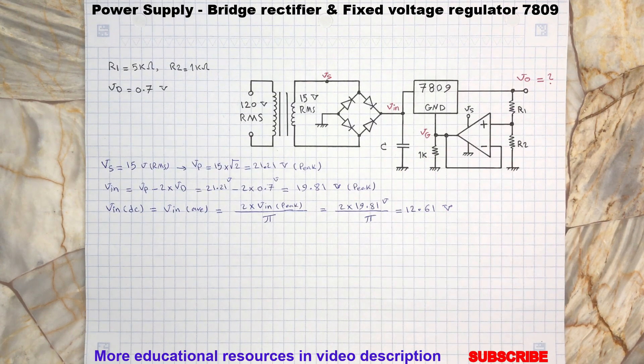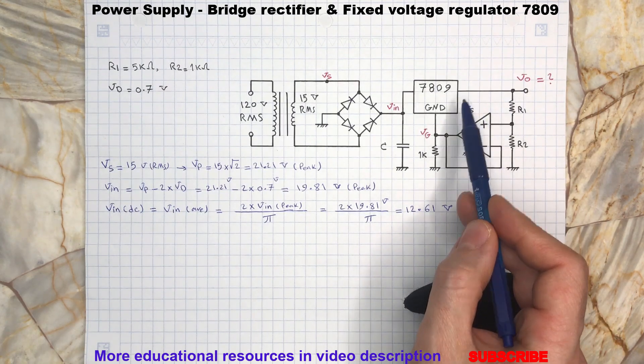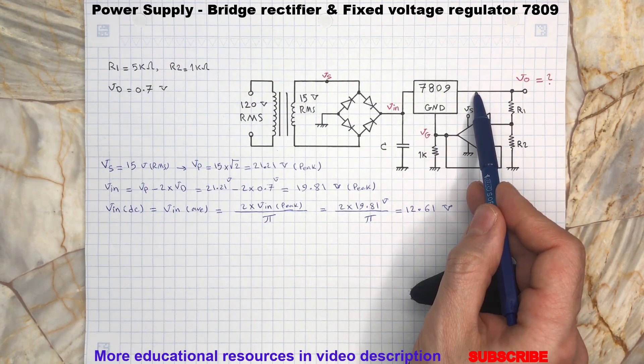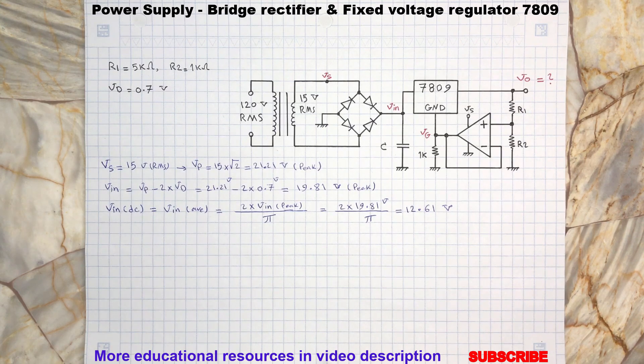The 3 terminal voltage regulator 7809 provides fixed 9 volt voltage between its ground and output terminals. Note, the input and output voltage range for 7809 IC is specified in the manufacturer specification datasheets.